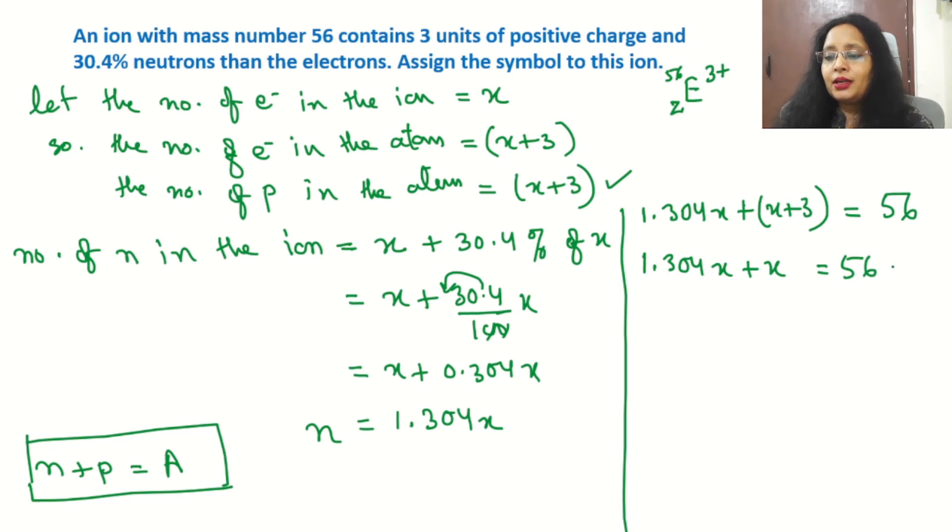Now we will try to solve this: 1.304x plus x plus 3 is equal to 56. So 1.304x plus x is equal to 56 minus 3, which gives 2.304x equals 53. Solving this, x equals approximately 23.04.